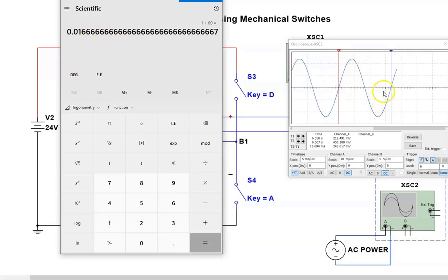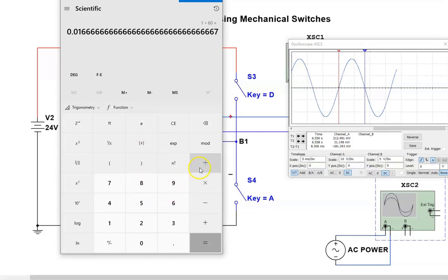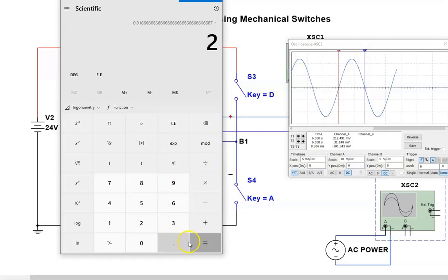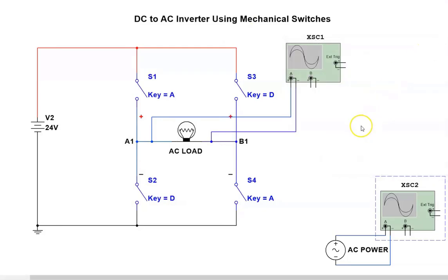One full alternation takes 16 milliseconds. How long does it take to complete half an alternation? We divide one cycle by two — it takes 8.3 milliseconds, or 0.0083 seconds. Please remember that. We will need that information when we construct our inverter using transistors, which we are going to do next.